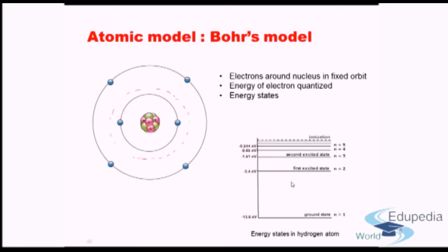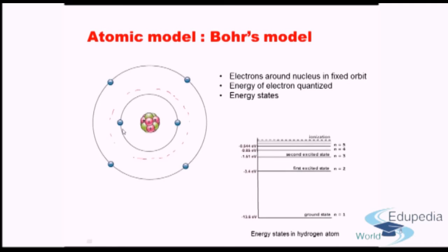Each energy level corresponds to a state: the lowest is the ground state, then the first excited state, second excited state, and so on. If sufficiently high energy is given, ionization occurs — the electron gains enough energy to be completely freed from the atom. The atom then develops a net positive charge because it has lost one negative charge.